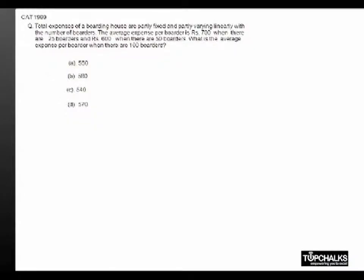In this question, the total cost involved is equal to the fixed cost plus the total variable cost. Total variable cost is the total number of people multiplied by the variable cost per head. So if you are talking about average expense, average expense will be t by n equals f by n plus b.